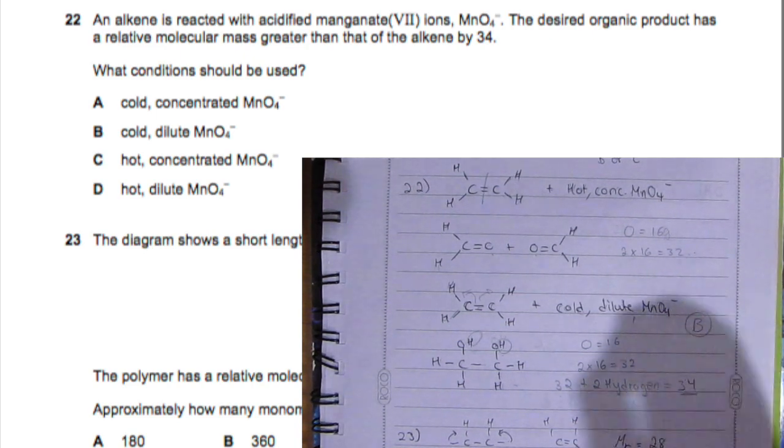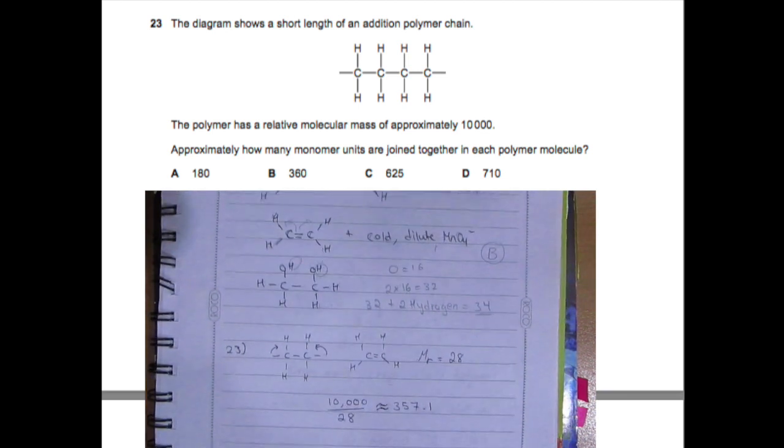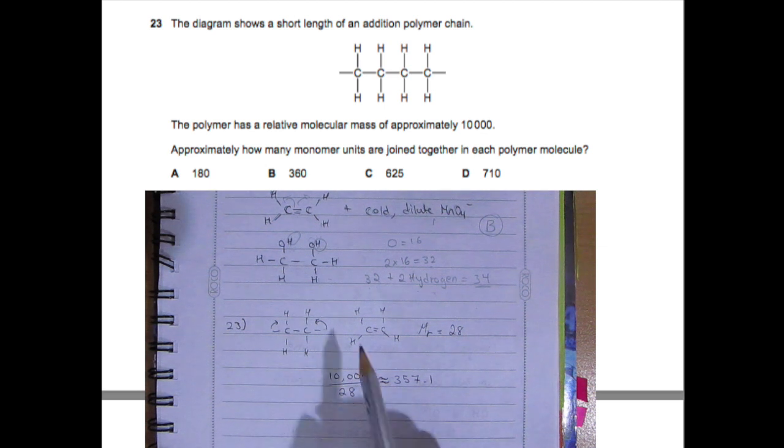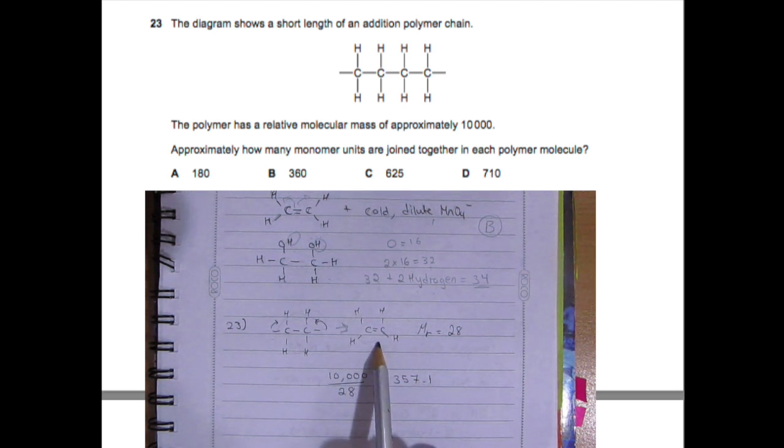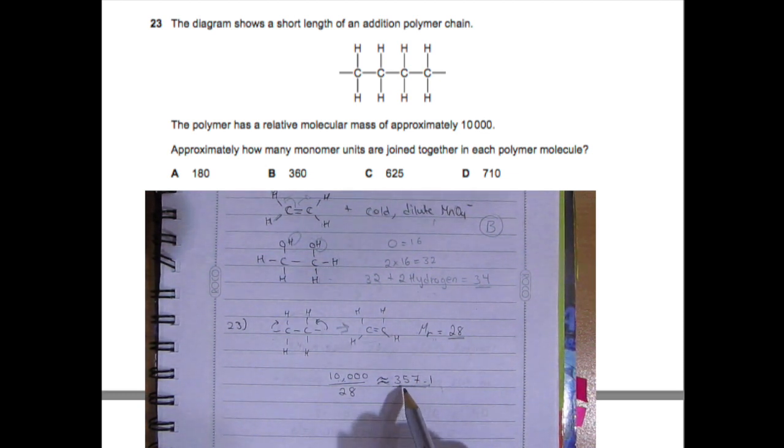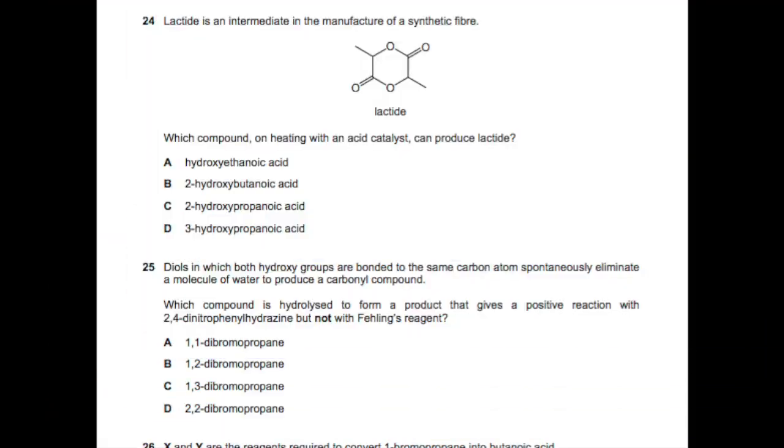Then question 23. The diagram shows a short length. Basically we have a total of four - the smallest it can be is this. This is the monomer which is this, and the MR of that is 28. MR of the entire thing is 10,000, so 10,000 divided by 28 is 357.1 approximately. So you can have about this many monomers in the entire polymer, so the answer would be B.